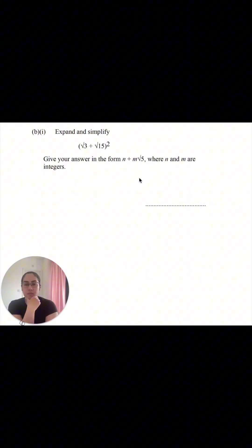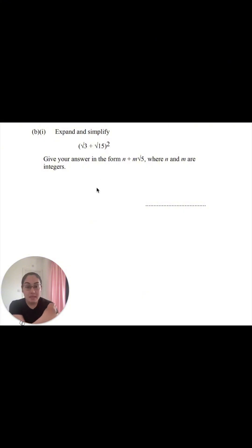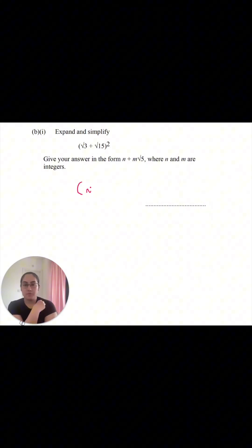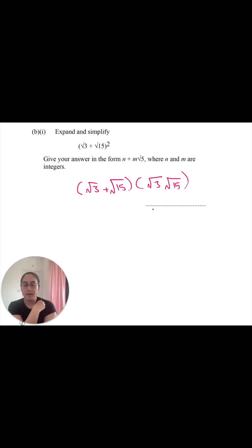So first things first, we're not going to focus too much on this format just yet. To begin with, we're going to start by looking at what the question says. We're going to expand. The whole bracket has been squared, so that means we're looking at a double bracket. Root 3 plus root 15 is being multiplied by root 3 plus root 15.